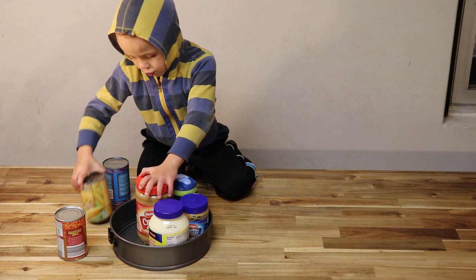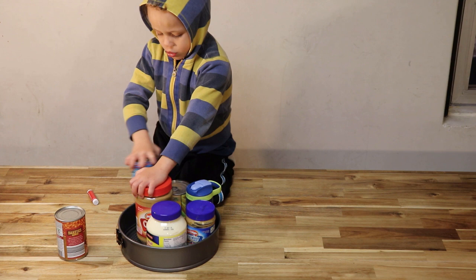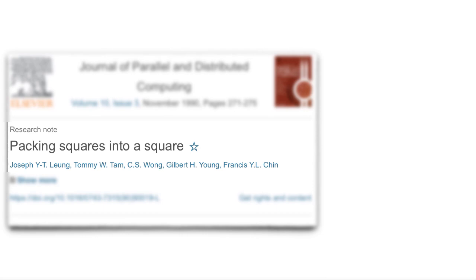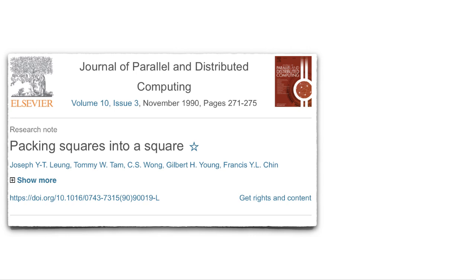Even basic versions of the problem are NP-hard, so we cannot hope to come up with an efficient algorithm that solves instances to provable optimality. In a 1990 paper, Leung et al. showed this for deciding whether a set of squares can be packed into a square container. Their approach is based on a reduction of the classic three-partition problem.